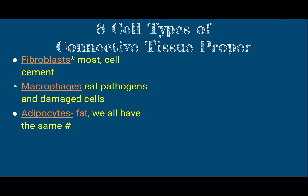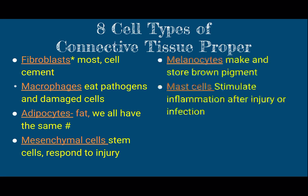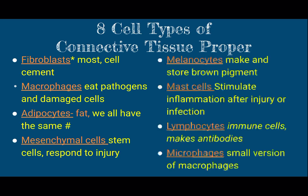By the way, we all have about the same number of adipocytes — it doesn't matter if you're heavy or not, you have about the same number. Mesenchymal cells are important for injury repair. Melanocytes are our pigment cells. Mast cells are the ones that make us swell up when we get hurt; they're actually protecting our tissues underneath. Lymphocytes are part of our immune system. And the last type is kind of like a macrophage — it's just a smaller version called a microphage.